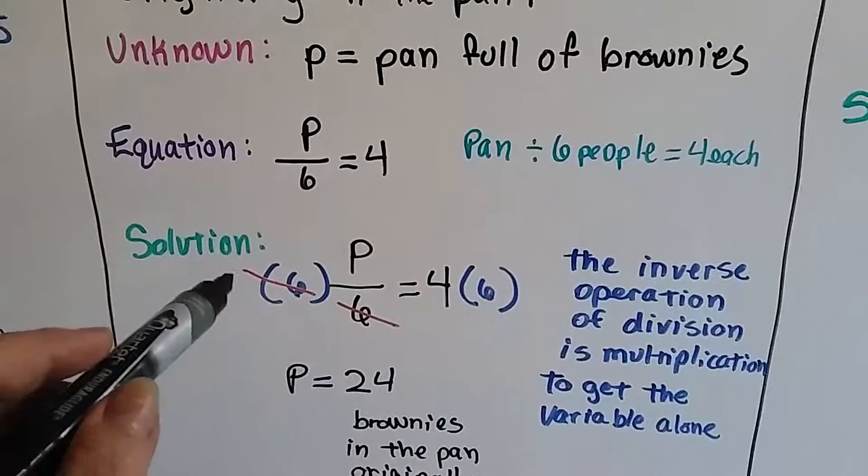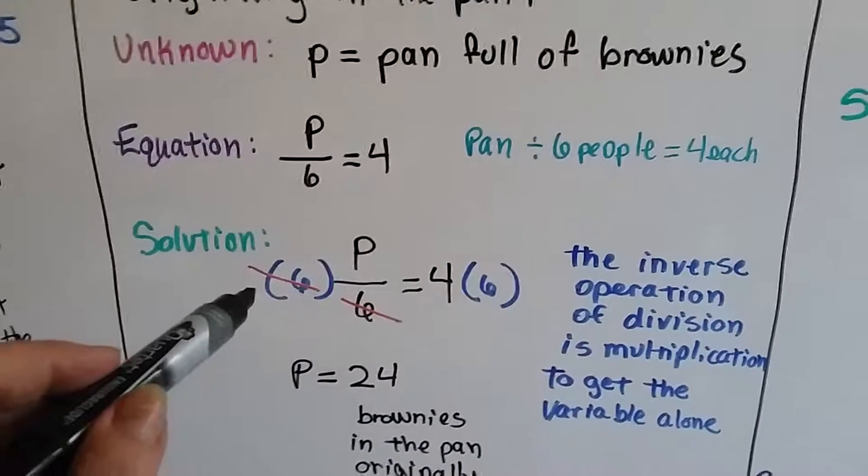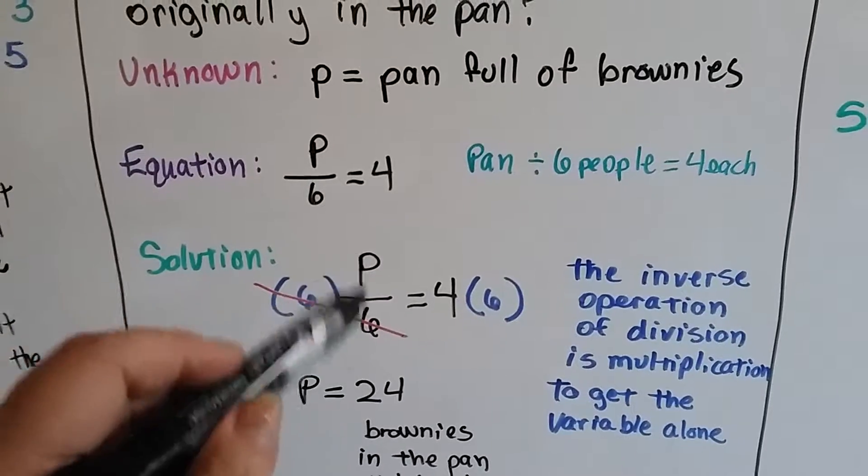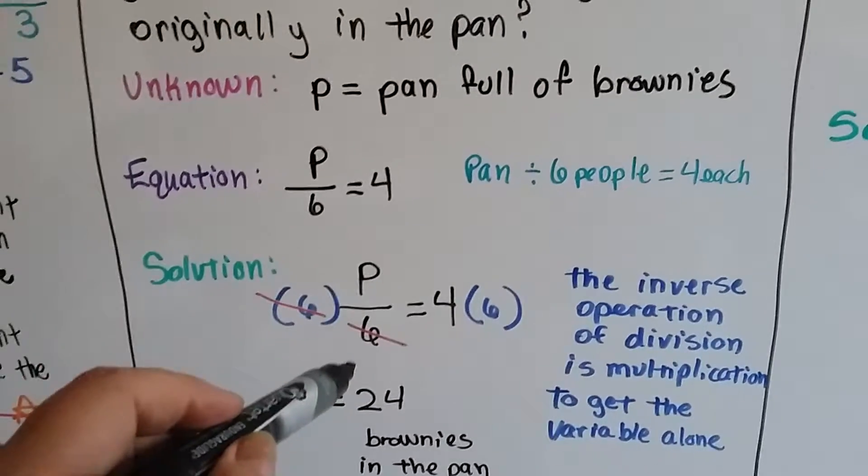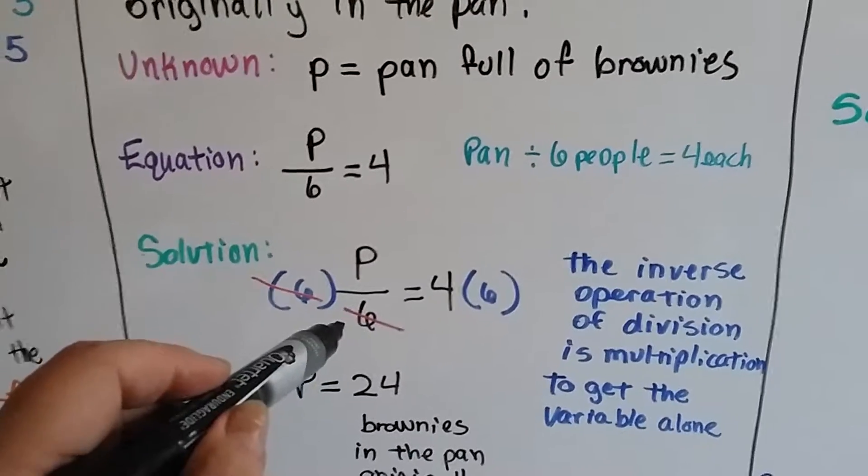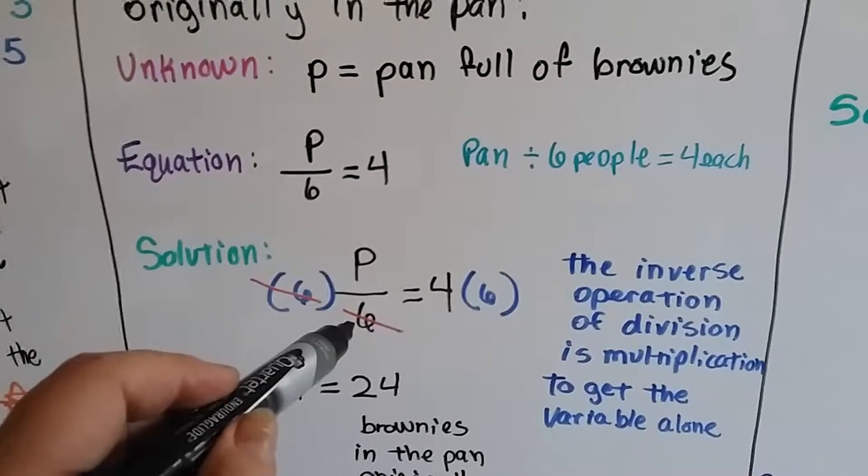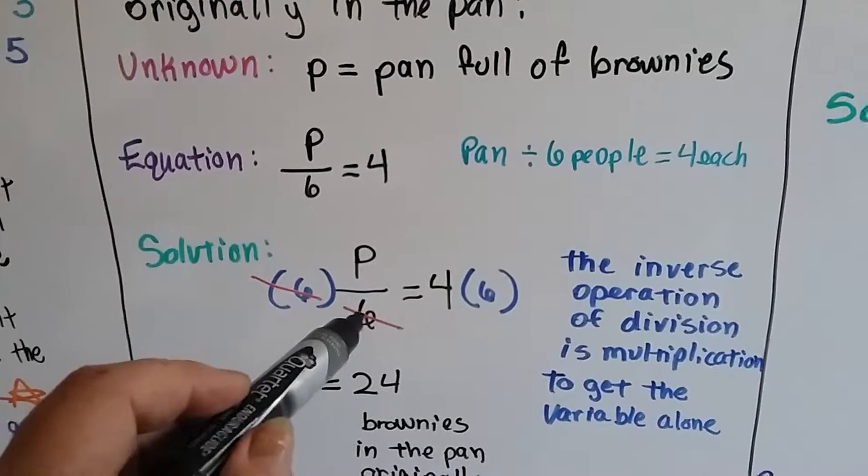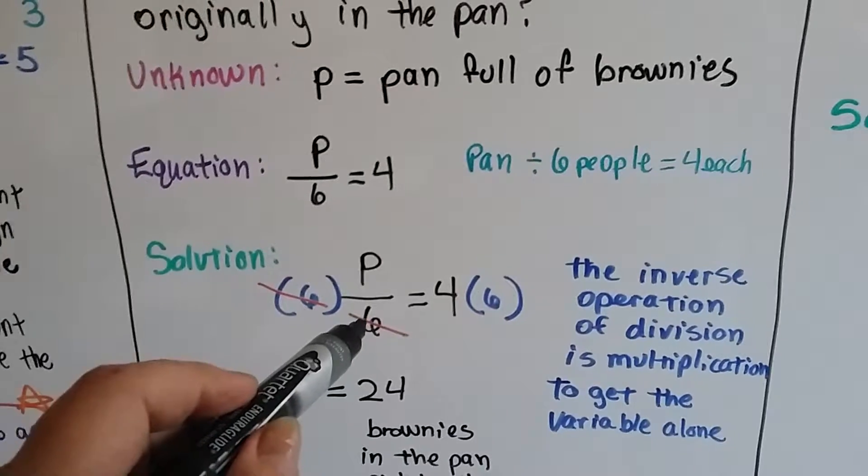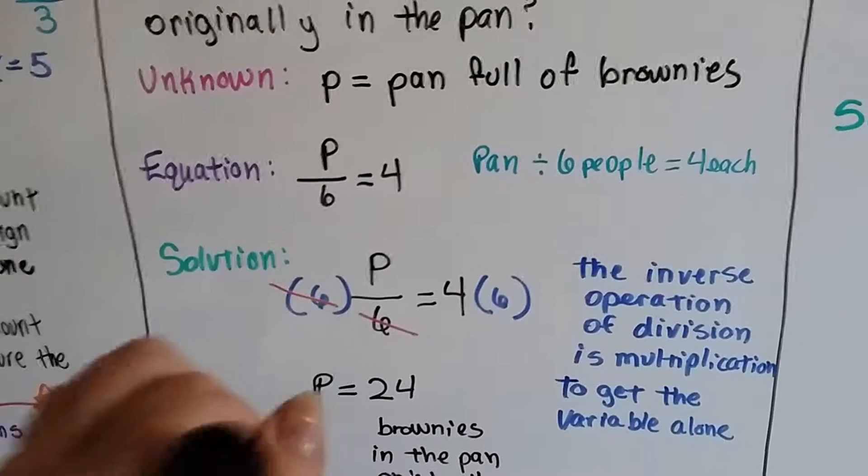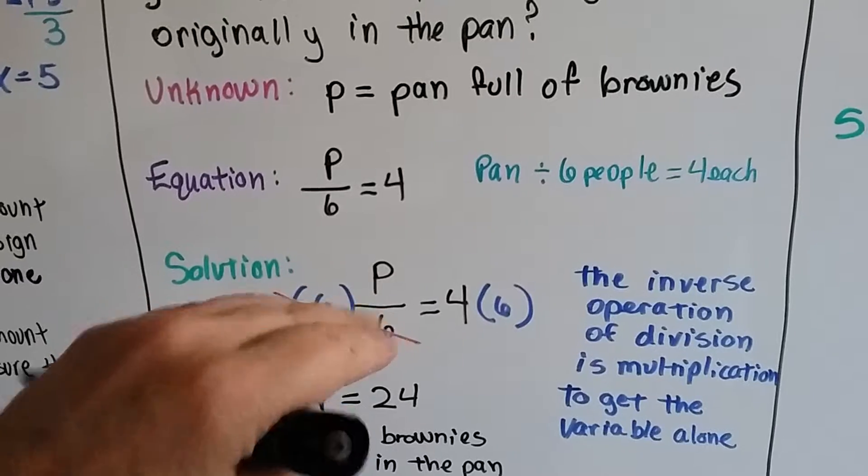So our solution is, the inverse operation of division is multiplication. And this is a division problem. Remember, all fractions are little division problems. So we have to use multiplication to get that variable p by itself. So we're going to multiply each side by this 6 to make it get away from that p. We need to get rid of it so the p is by itself.